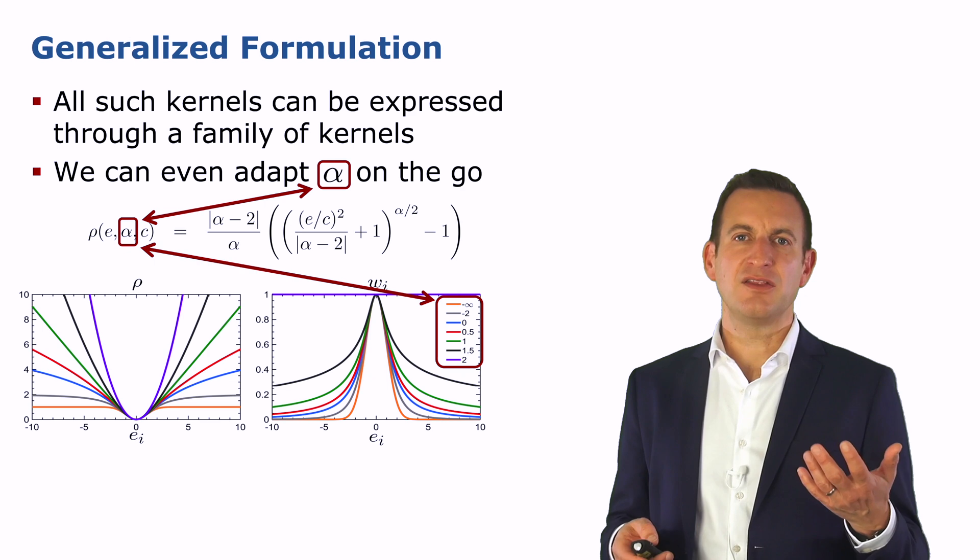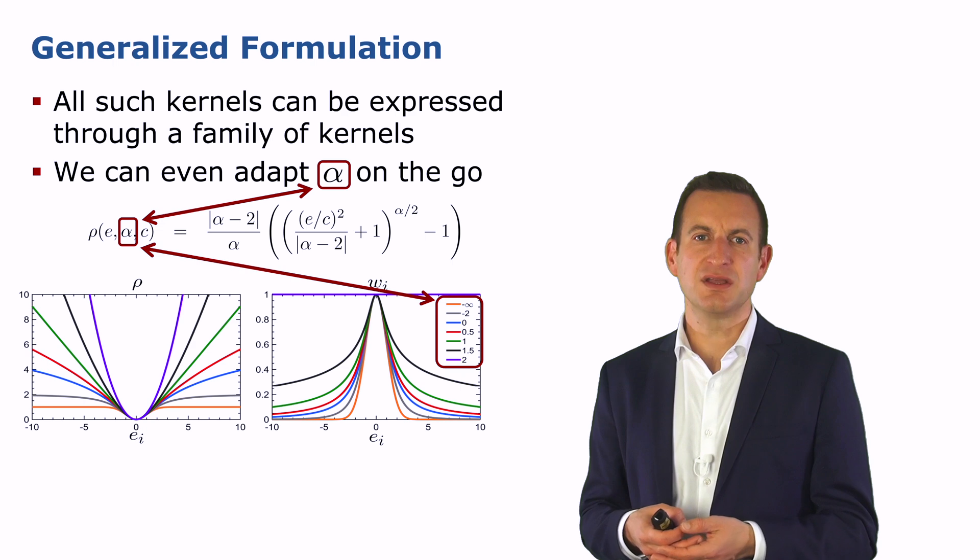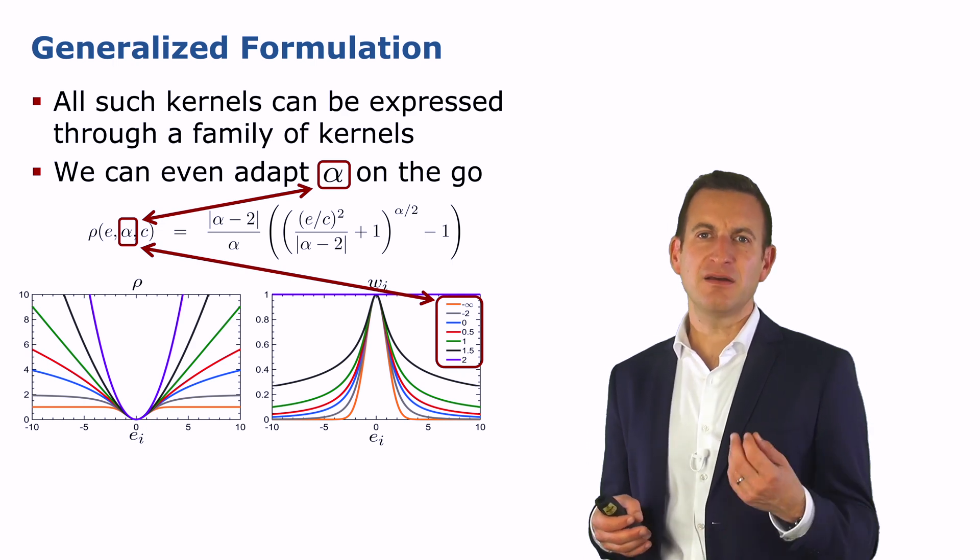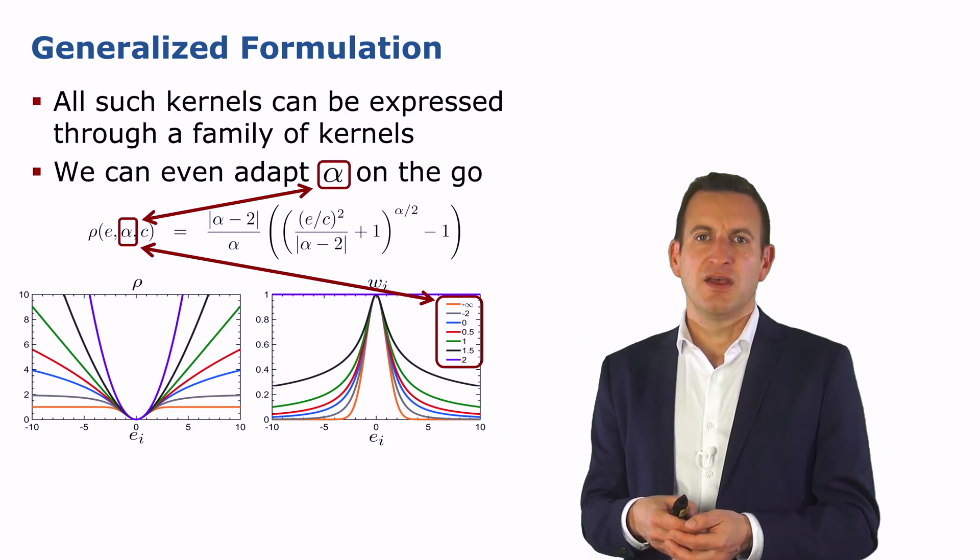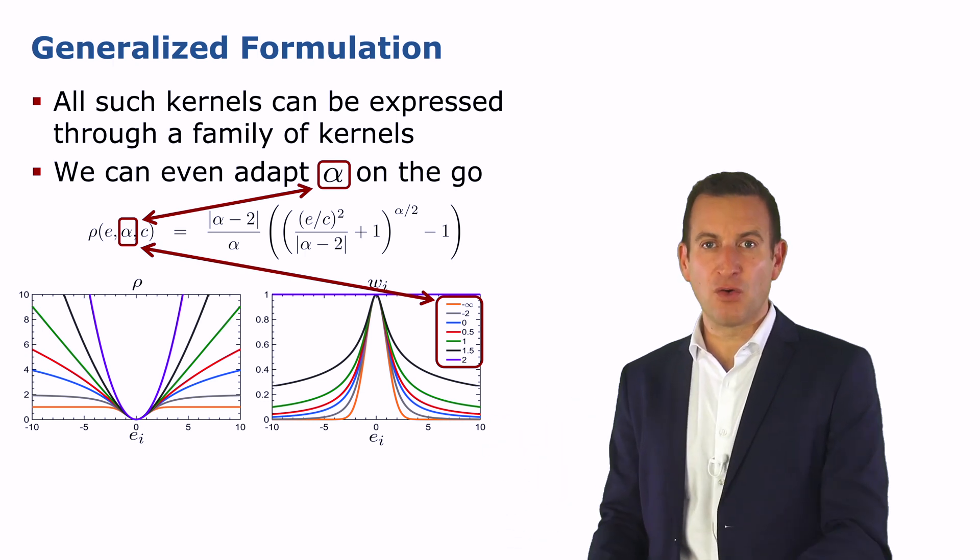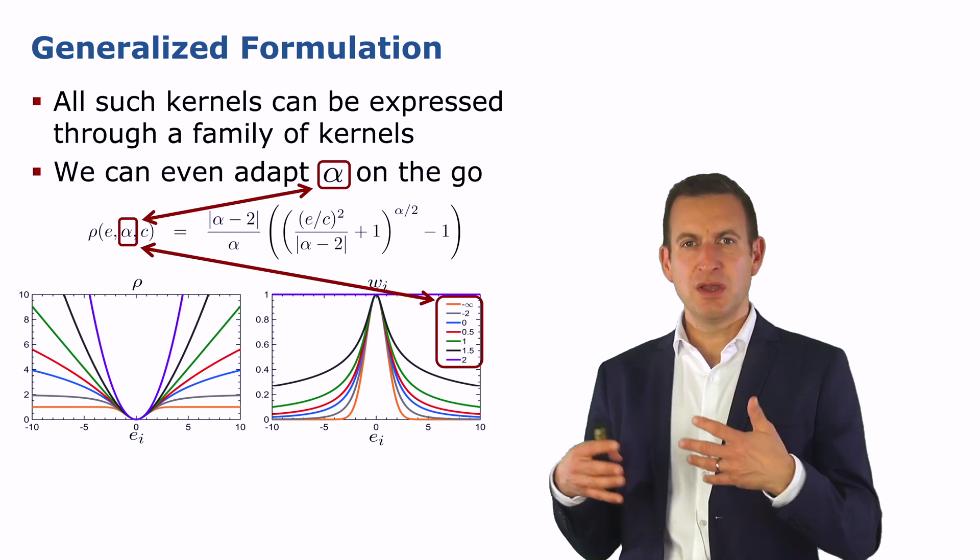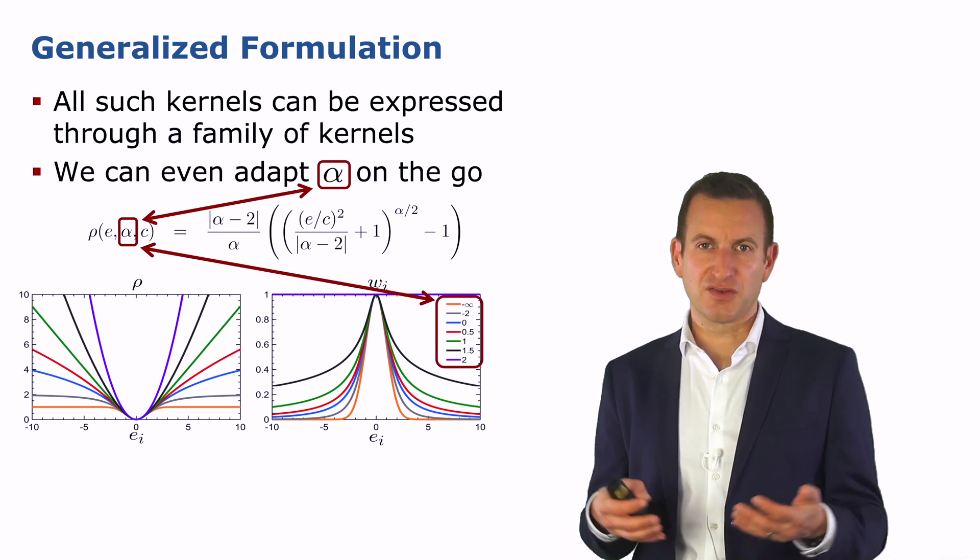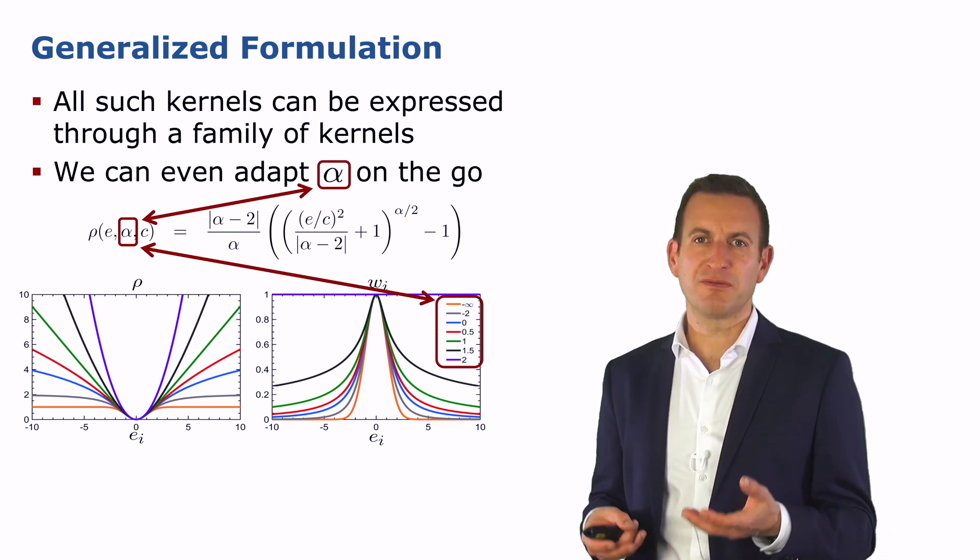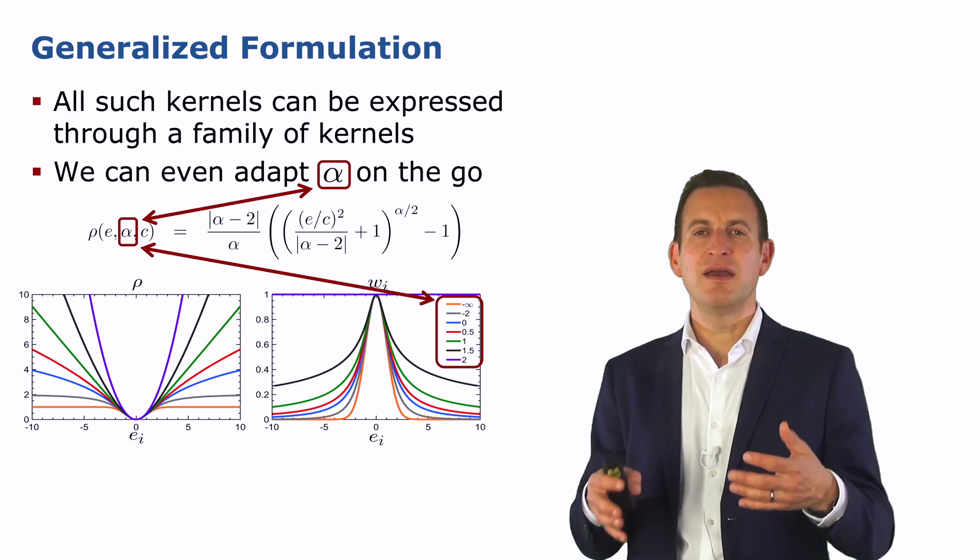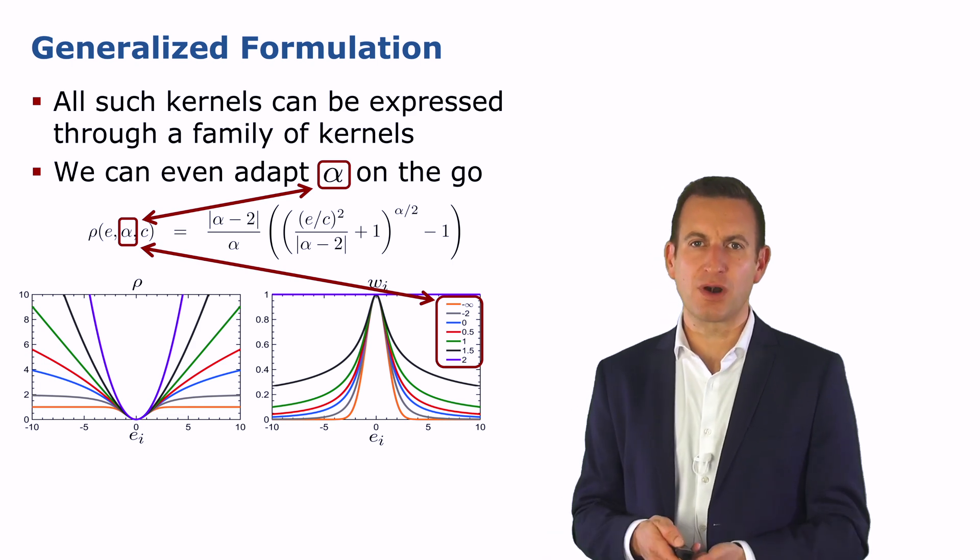We can even go a step further and use a different type of function, which is basically a family of those kernels shown here in this equation, where we have an additional parameter alpha. And depending on the value of alpha, we're basically changing the shape of these kernels. So in situations where we have high outliers, we may take a very low value for alpha. And in situations where we're extremely certain about what's going on, we set alpha to 2, because then we are in the least squares approach. And we can basically turn the optimization problem of finding the best configuration, minimizing the error, into minimizing the error and at the same point in time selecting the correct kernel for our situation.